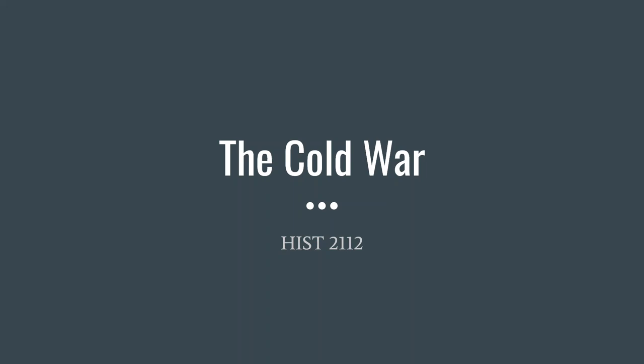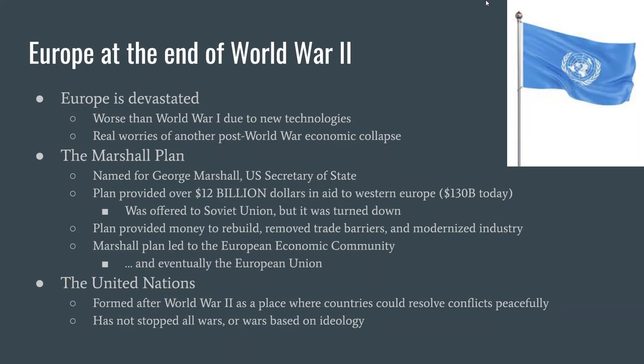Good afternoon. Today's lecture is about the Cold War, and we have to start with what Europe looked like at the end of World War II to really understand where the Cold War comes from. To put it simply, after World War II, Europe is destroyed. So much fighting happened in both Eastern and Western Europe that the devastation is worse than it was in World War I.